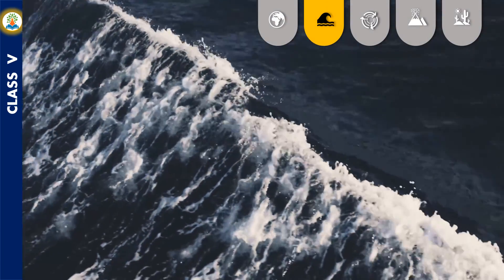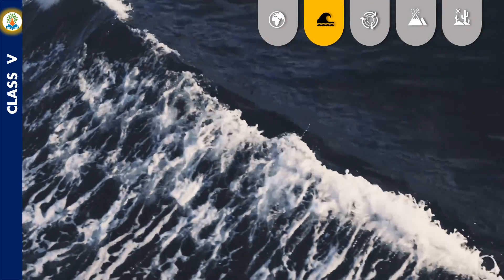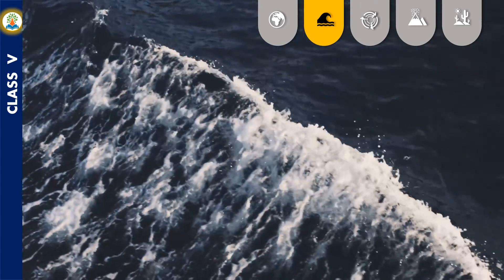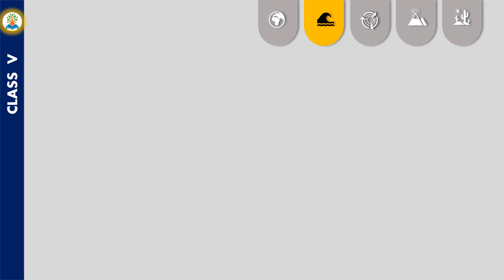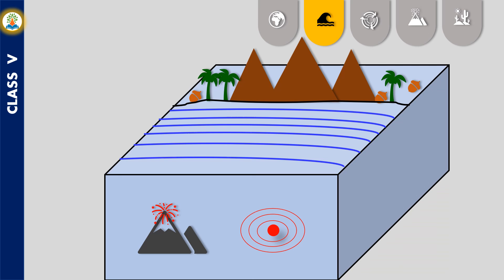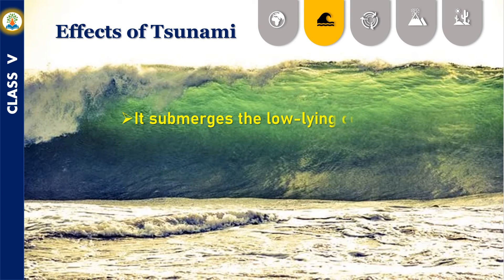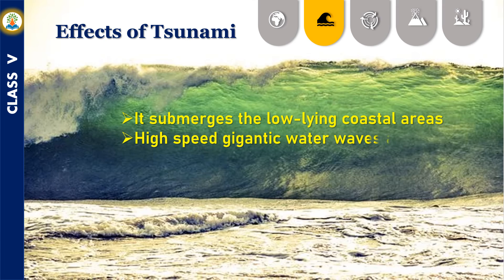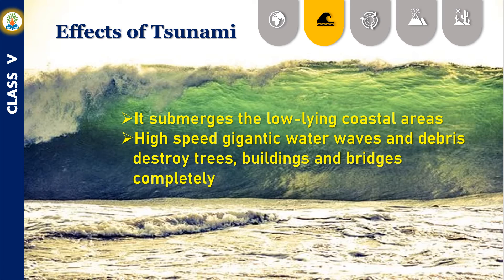A tsunami occurs when a huge volume of water is displaced in the ocean, generating large waves. The displacement may be caused by an underwater earthquake, volcanic eruption, or an explosion. Small waves generate at the point in water and move towards the shore, where they swell up into gigantic waves. Greater damage is caused by the high-speed waves and debris of a tsunami. It submerges low-lying coastal areas, and the high-speed gigantic water waves and debris destroy trees, buildings, and bridges completely. It is difficult to escape a tsunami; people should follow warnings and instructions telecast by authorities.